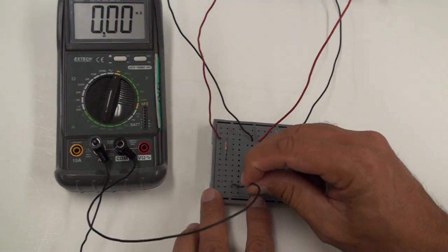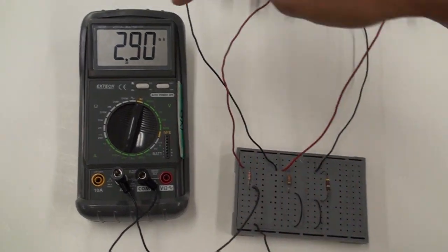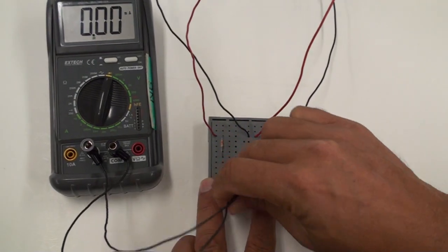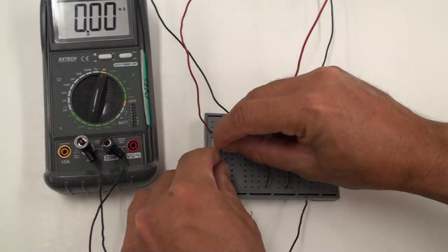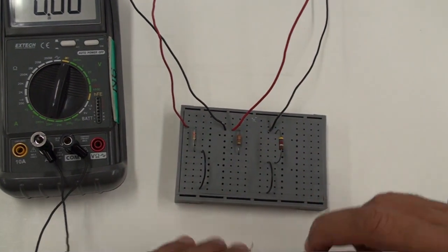In practice, this means simply replacing each jumper with the ammeter. Don't be overly concerned with the sign of the currents you read. You may record absolute values for these currents if you wish.